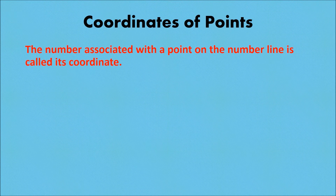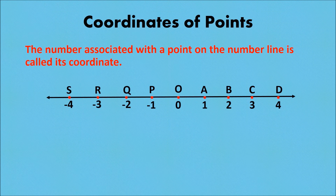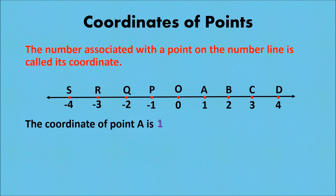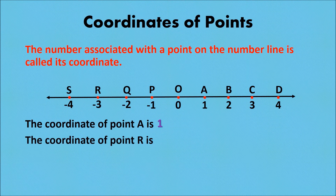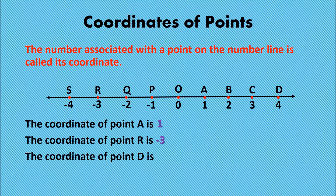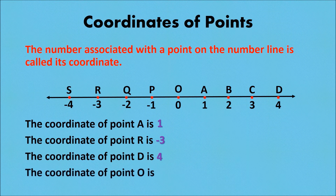What do you mean by coordinates of points? The number associated with a point on the number line is called its coordinate. Here we have a line. The coordinate of point A is 1, since the number associated with point A on the number line is 1. The coordinate of point R is minus 3. The coordinate of point D is 4. The coordinate of point O is 0.